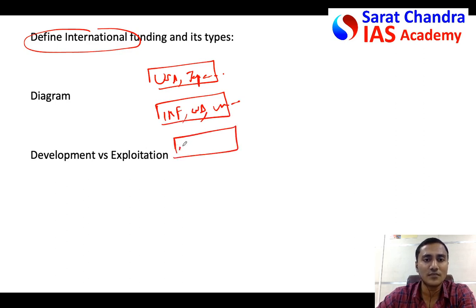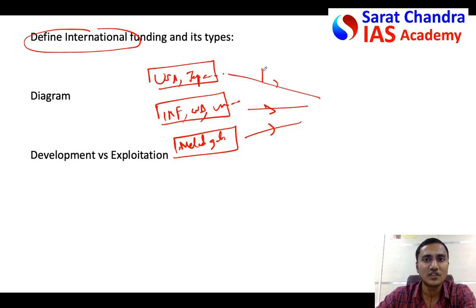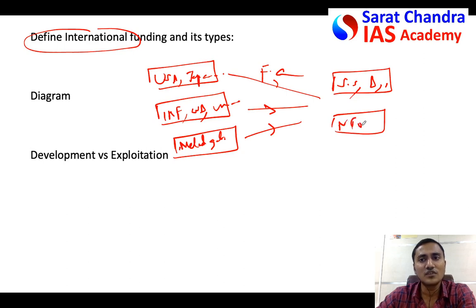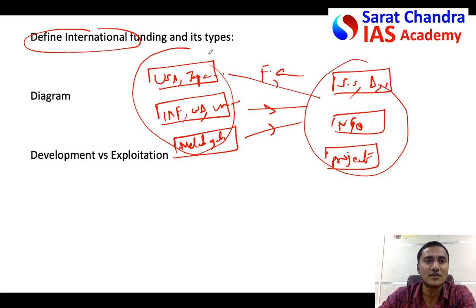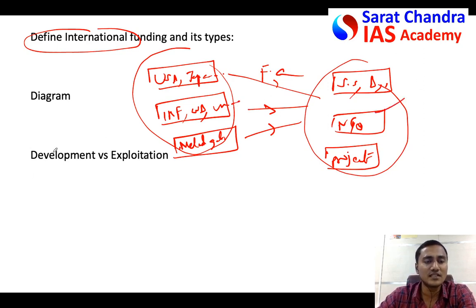It can also be any philanthropic body, for example the Bill & Melinda Gates Foundation, Tata Foundation, or any other foundation. When they give financial aid to underdeveloped countries like sub-Saharan African countries, or developing countries like Bangladesh and Sri Lanka, or fund certain NGOs which work internationally, or fund certain projects like the BBIN Motor Project or the Kaladan Multimodal Project - this is international funding. You can define these either in lines or draw a simple flow chart.